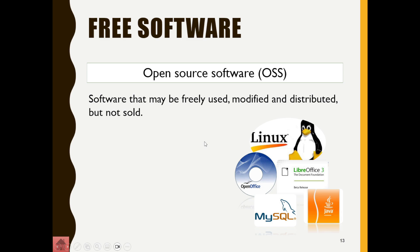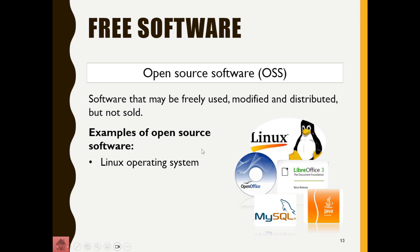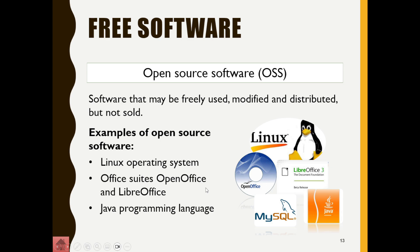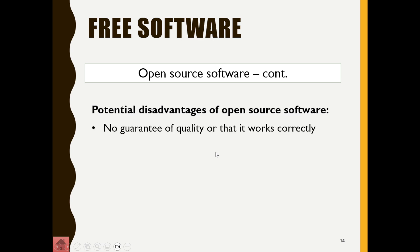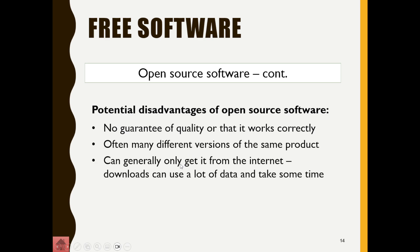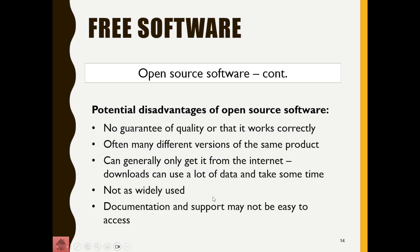Open source software means the program may be freely used, modified — that's the key — and distributed, but not sold. Examples include the Linux operating system, office suites like OpenOffice and LibreOffice, Java programming, and MySQL database systems. Because anyone can download, modify, and re-upload the code, there's no guarantee of quality, there are often different versions, it can generally only be obtained from the internet, and there's no real support or documentation.